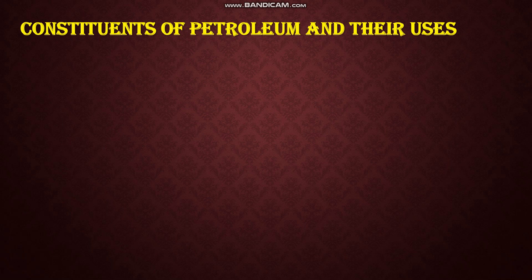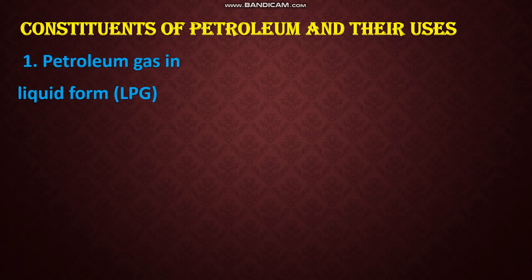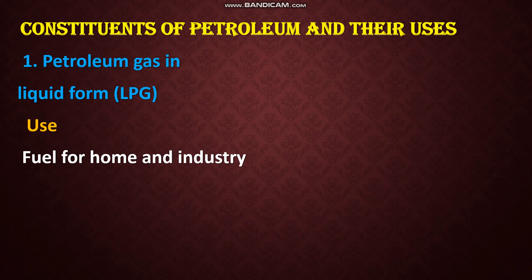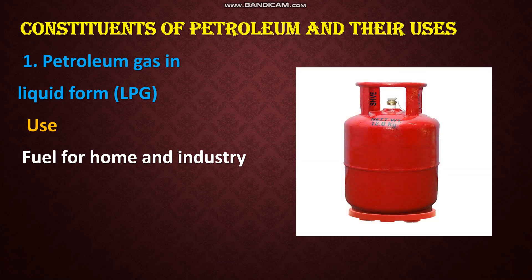Now let us see what are the constituents of petroleum and their uses one by one. The first one is petroleum gas in liquid form — otherwise called liquefied petroleum gas or LPG. You are familiar with this; we use it in our houses to cook food. It is used as a fuel for home and industry.